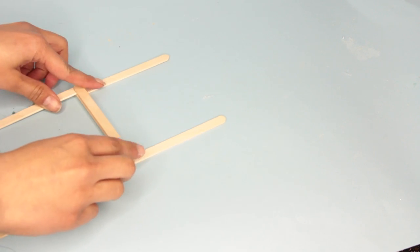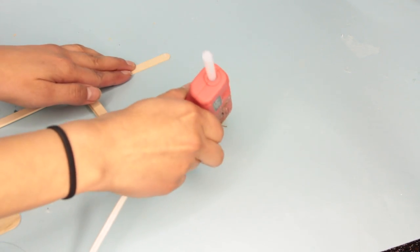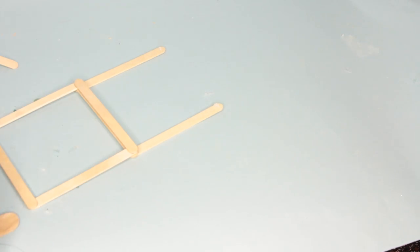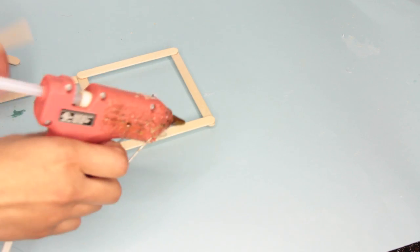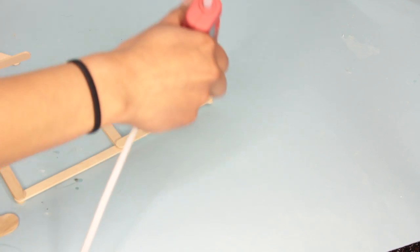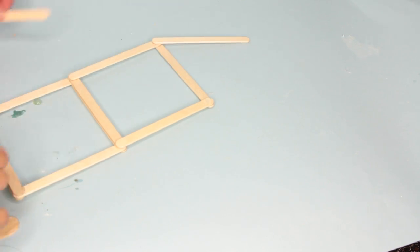Then I place another popsicle stick horizontally over the two popsicle sticks. Then I glue on two more popsicle sticks that are going vertically on the top of the popsicle stick I just glued on. Then I add another popsicle stick horizontally to the top of those two. And I take two more popsicle sticks and I glue them so that they cross each other so the top makes a triangle. So I overlap them.